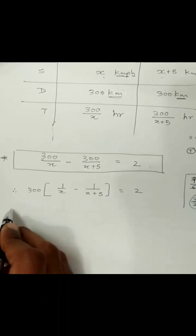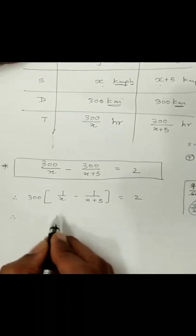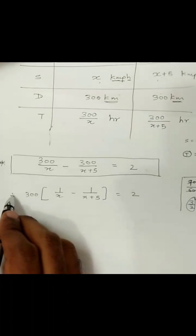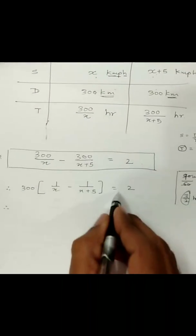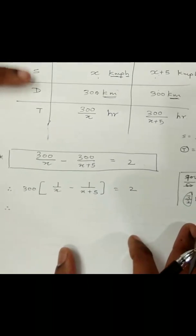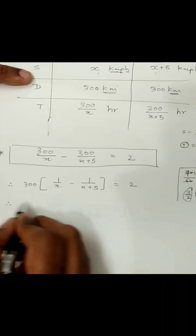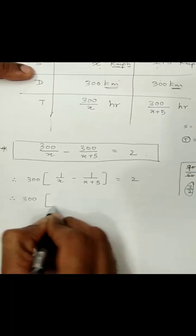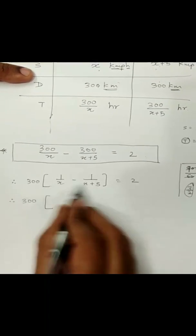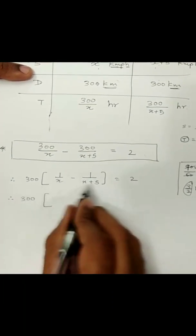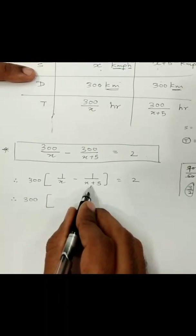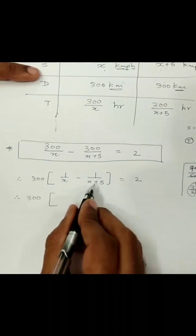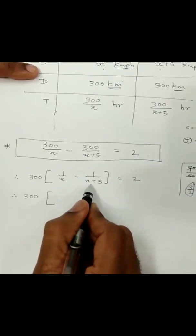I factorized by taking 300 as common. For presentation, keep the equals sign aligned — this makes your work neat. Now inside the bracket, we perform the subtraction of two fractions. You do cross multiplication: step 1 is the numerator of the first fraction times the denominator of the second.